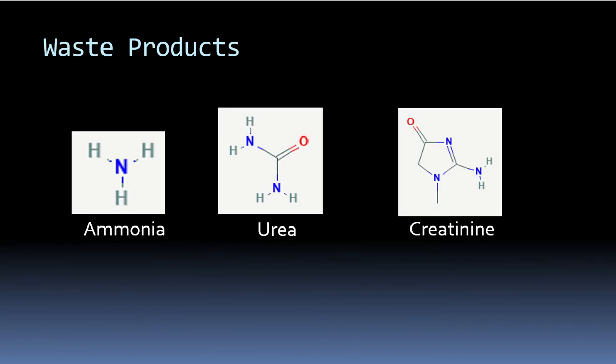Just to give some idea of what a lot of these waste products look like, you can notice that many of them have nitrogen atoms in them. Something I wanted to point out on the chemistry side is that a lot of the waste products your body is trying to get rid of contain a lot of nitrogen components. That should be a sign that there are many waste products that your body does not want to have.